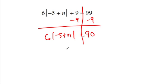I'm going to divide both sides by 6. That gives me the absolute value of negative 5 plus n equals 15.